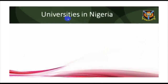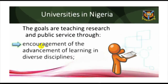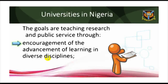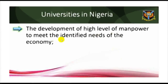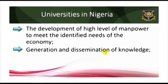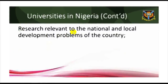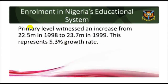Universities in Nigeria — goals of teaching, research, and public service through: encouragement of the advancement of learning in diverse disciplines; the development of high-level manpower to meet the identified needs of the economy; generation and dissemination of knowledge; research relevant to national and local development problems; the maintenance and transformation of the cultural heritage of the country through the preservation and adaptation of local traditions and values; and public service.